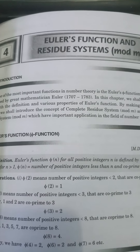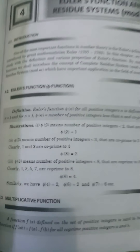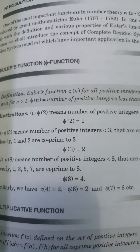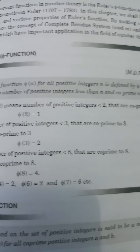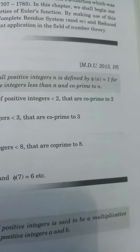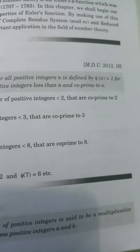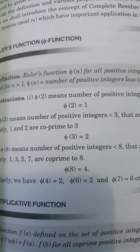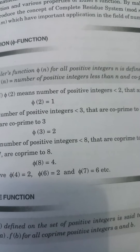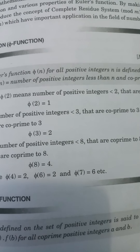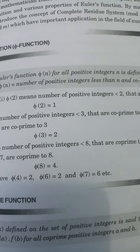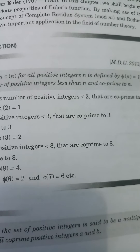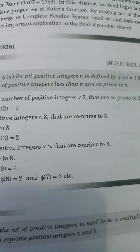This is the part of Number Theory. Euler's Function — the Phi Function — Euler's function phi(n) for all positive integers n is defined by: phi(n) = 1 for n = 1, and for n > 1, phi(n) equals the number of positive integers less than n and co-prime to n.